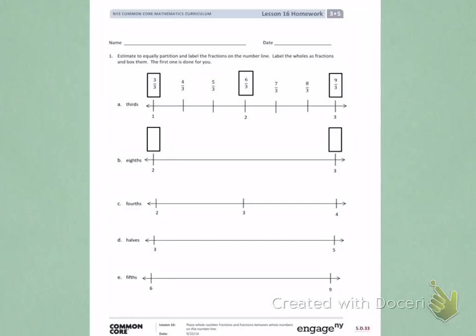This is Module 5, Lesson 16, Homework, Side 1. Today's objective was to place whole number fractions and fractions between whole numbers on a number line.